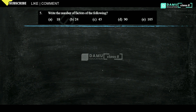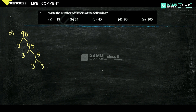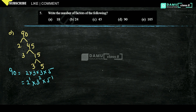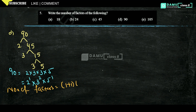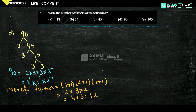Next is 90. Factorize: 90 = 2 × 3 × 3 × 5 = 2¹ × 3² × 5¹. Number of factors: (1+1) × (2+1) × (1+1) = 2 × 3 × 2 = 12 factors.